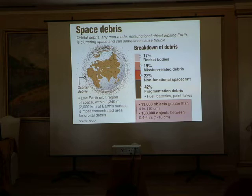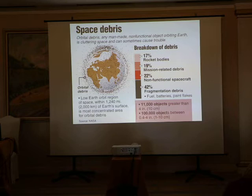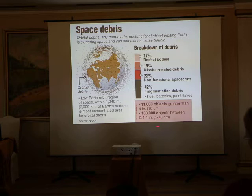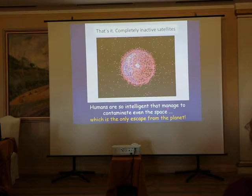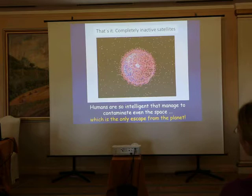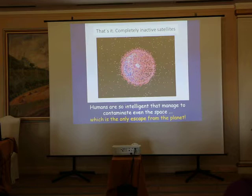Because we are launching satellites, rockets, etc., and we don't pay attention to the rubbish. We now have 11,000 objects greater than 10 cm and 100,000 objects between 1 and 10 cm in space. Humans are so intelligent that they managed to contaminate even space, which is our only escape from the planet. An impact at 36,000 km per hour — only one gram of particle is enough to destroy one spacecraft.